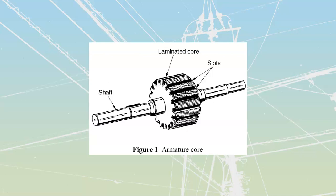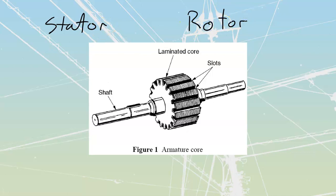First thing we're going to do is a little bit of terminology. There are going to be two main terms that you are going to hear again and again. They don't list them up front, but they are going to be stator and rotor. Stator is going to be the stationary part of the machine — what we would refer to as the frame, the yoke, the end bells, the bearings — all of that stuff is going to be part of my stator.